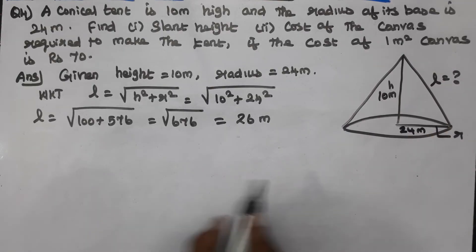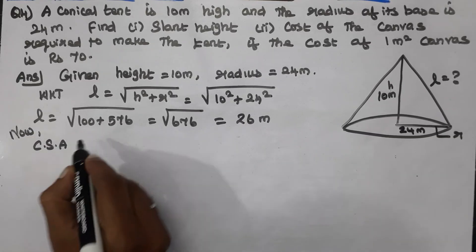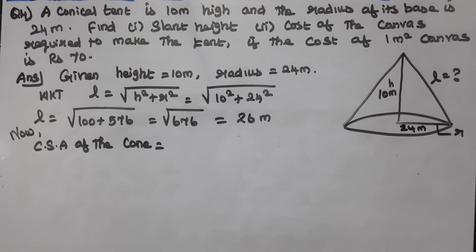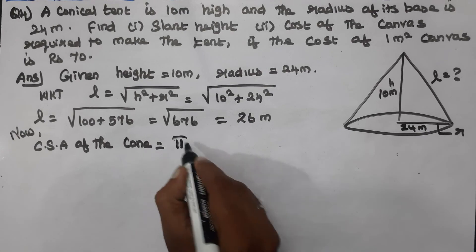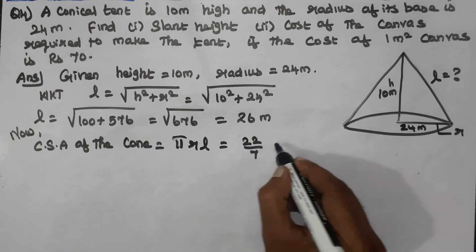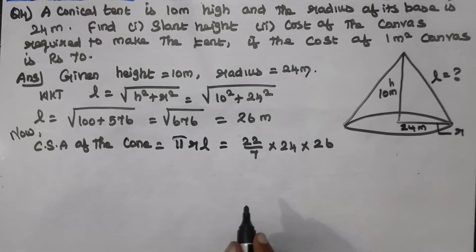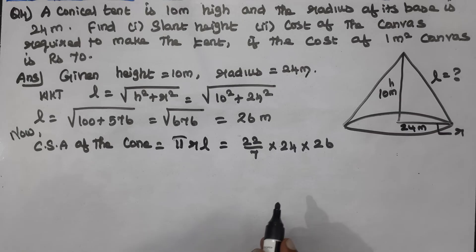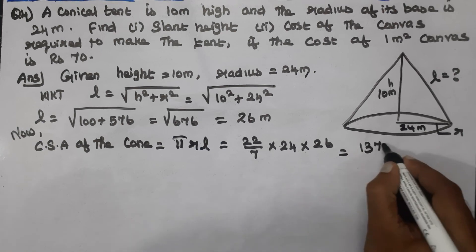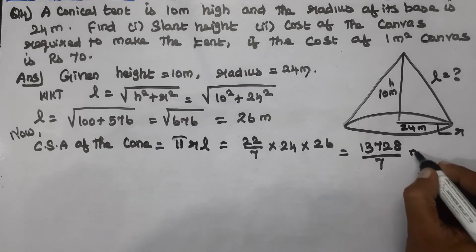The third step is curved surface area of the cone. Using 22 by 7. We get 13,728 divided by 7 metre square. This is the curved surface area. You can put metres square as the unit.